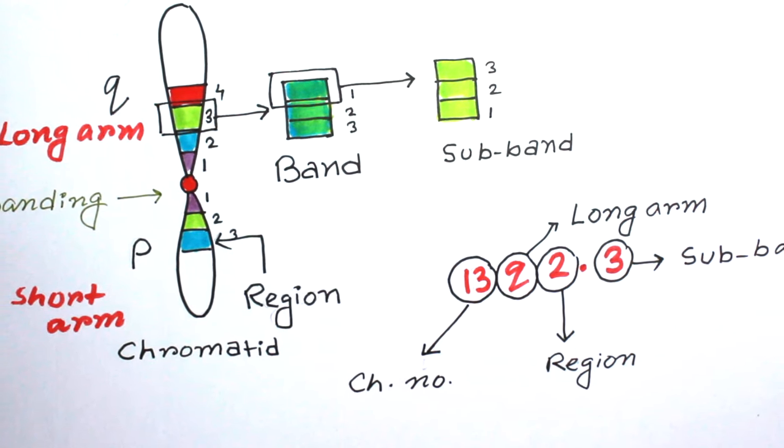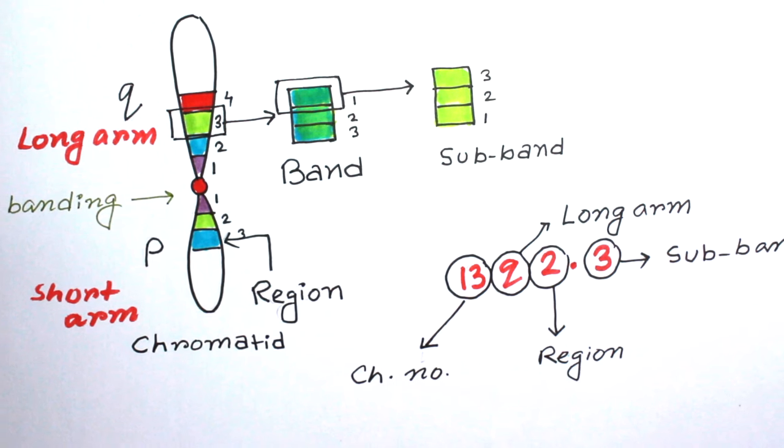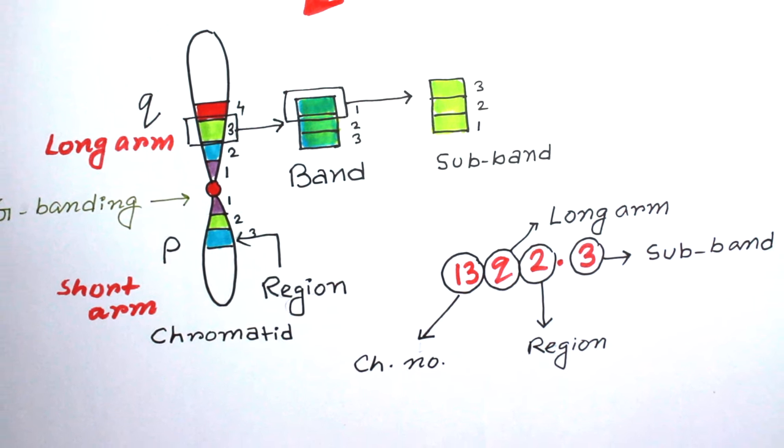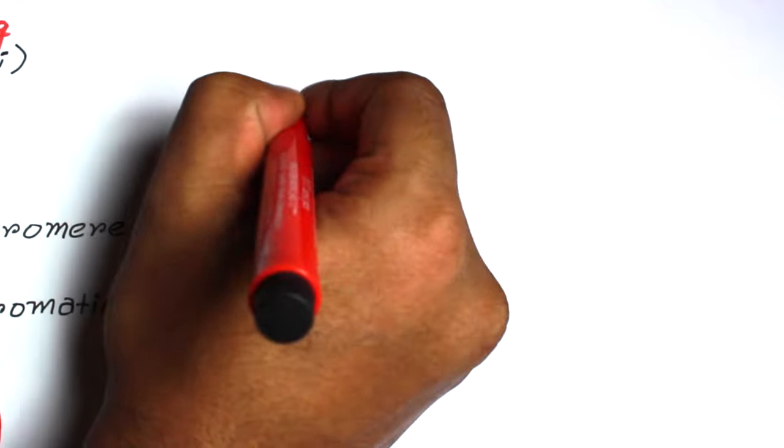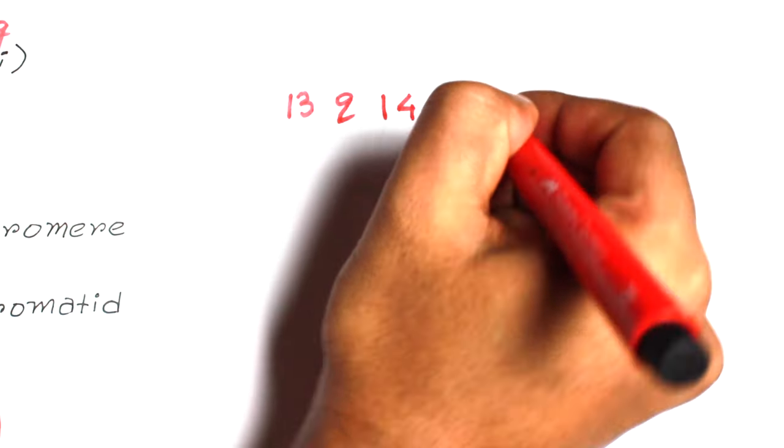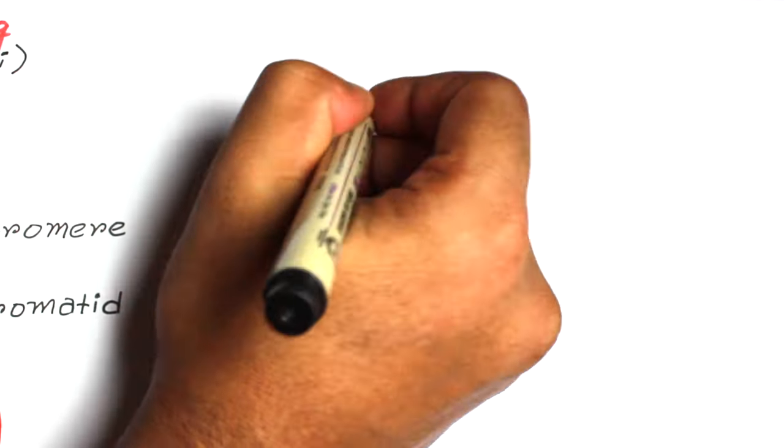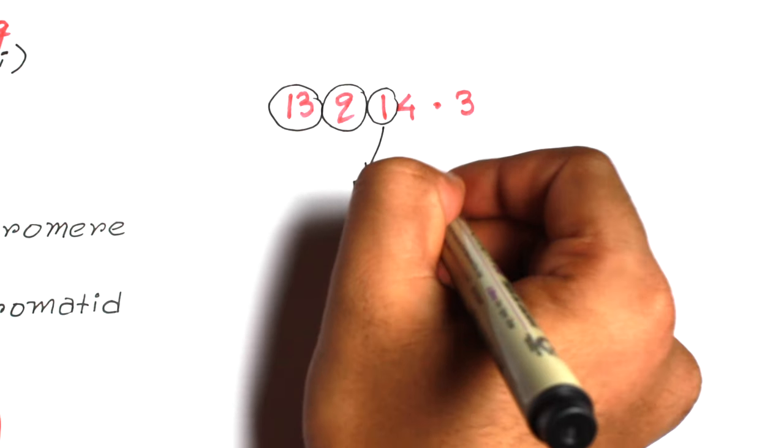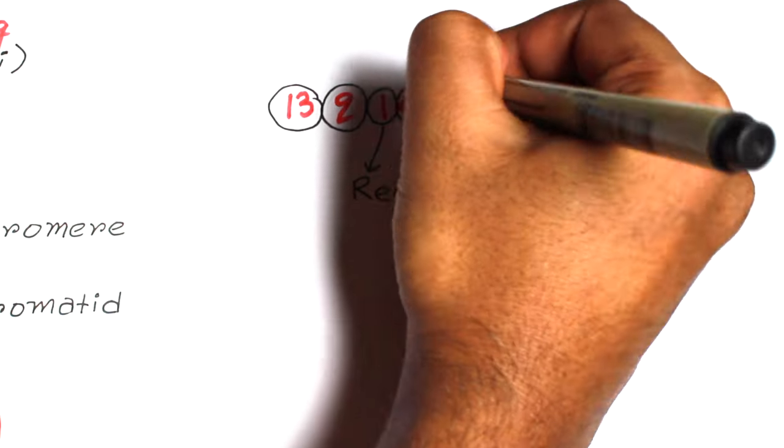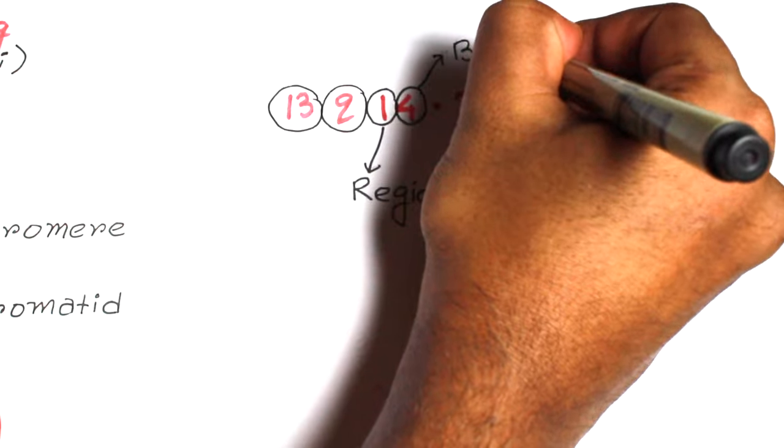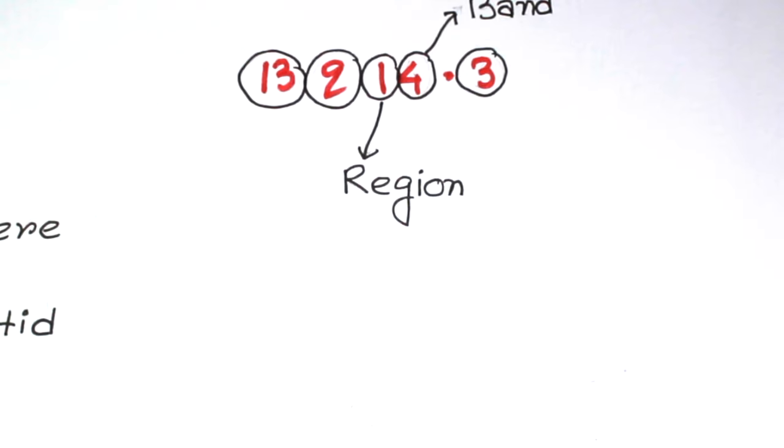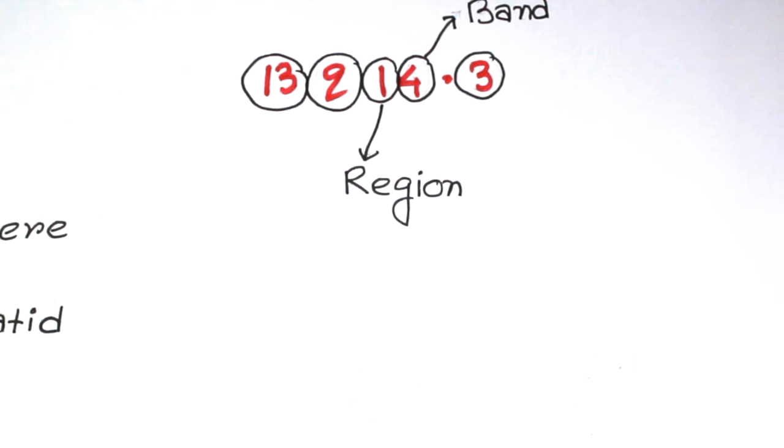Suppose it is written as 13q14.3. You already know that 13 is the chromosome number, and Q is long arm. And here, 14 refers to region 1 and band 4. First number is the region, and the second number is the band number. Please, please remember it.